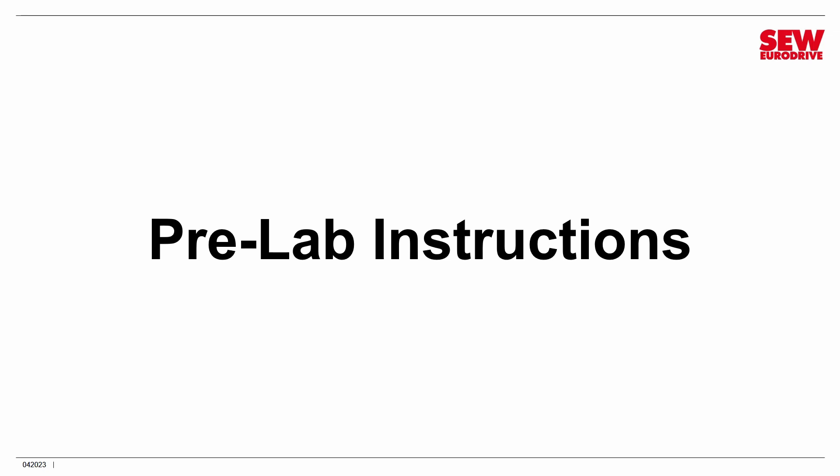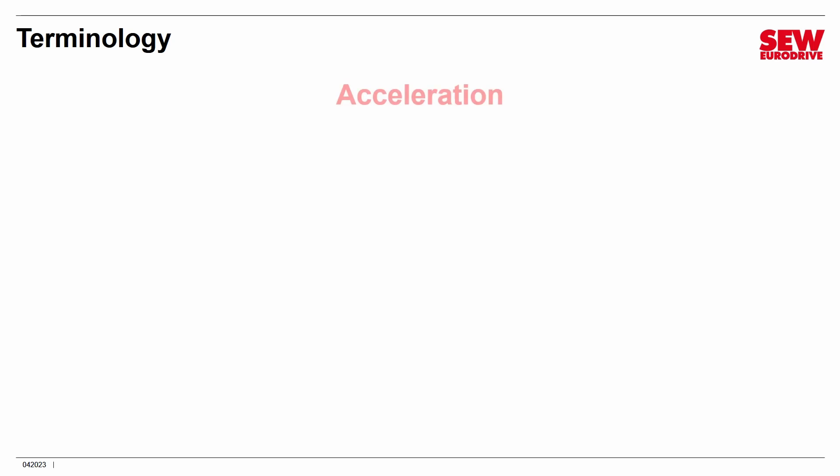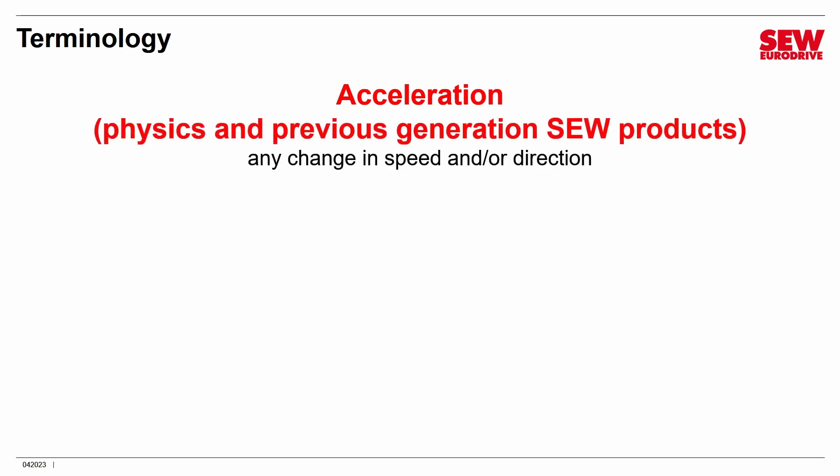I need to give you a fairly good foundation to understand ramps and stops, so this will take a little longer, but it is worth it. First, some terminology. Let's take the term acceleration. In everyday life and in physics, its definition is any change in speed and/or direction — that could mean a speed up, a slow down, a change of direction, or both. That's how we used to define it with earlier SEW products.